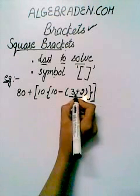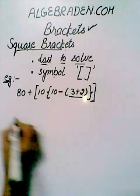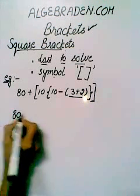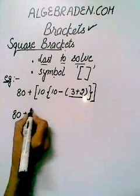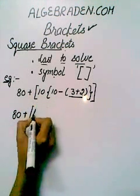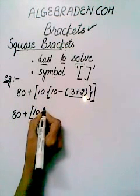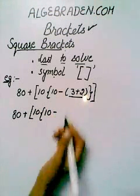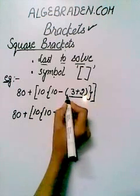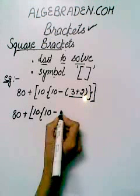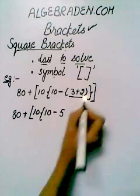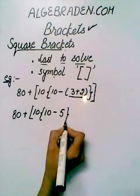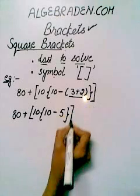First, we solve parenthesis brackets. 80 plus square bracket start, then curly bracket start, then minus. Solve the values in the parenthesis brackets: 3 plus 2 equals 5. Curly bracket close, square bracket close.